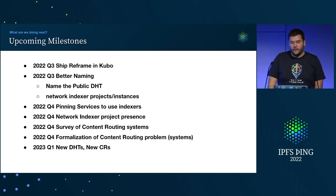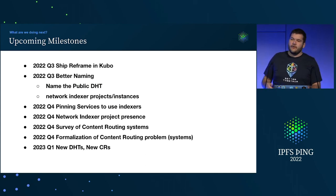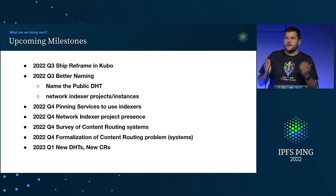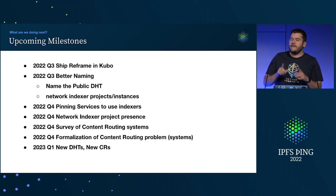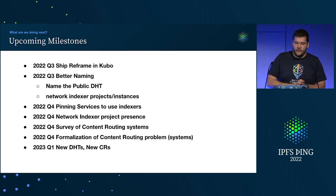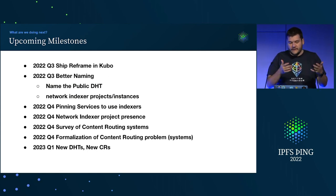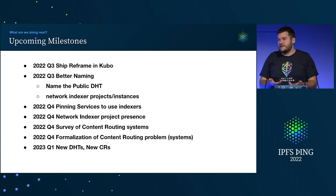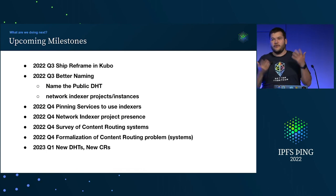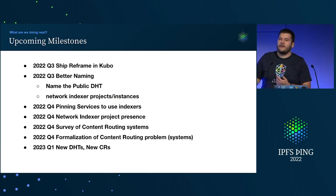That new formalization can pave the way for new DHTs and new content routing systems. We should do the work needed for the project to embrace new content routing systems — so for people to propose a whole new DHT, what does the adoption path look like? What do they have to do in order to get adoption from various groups?